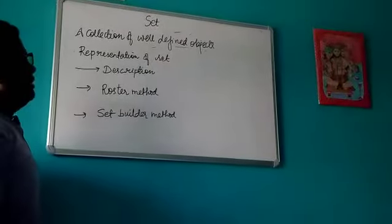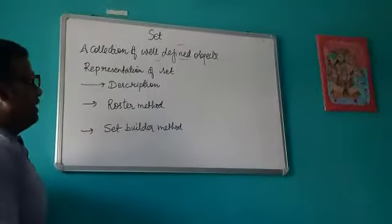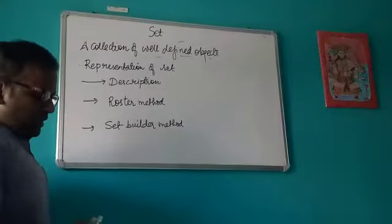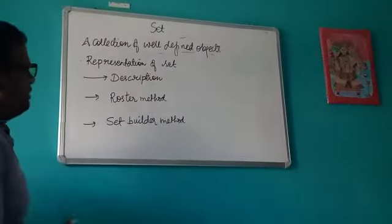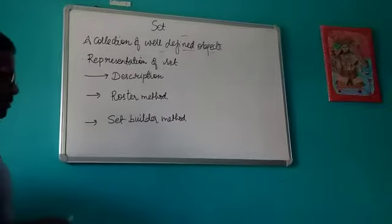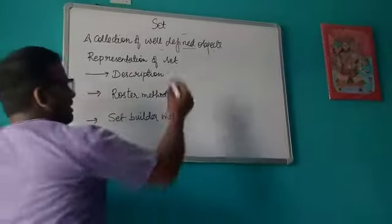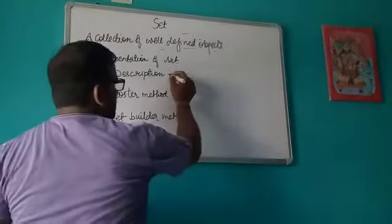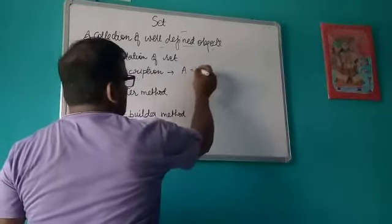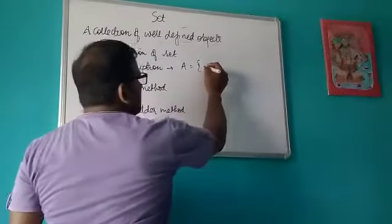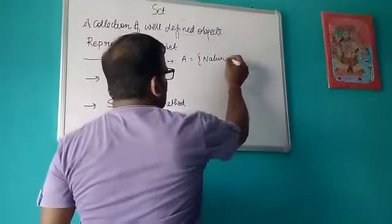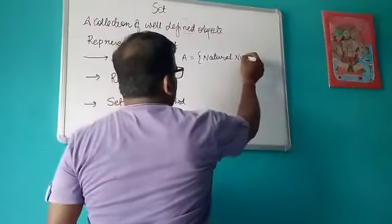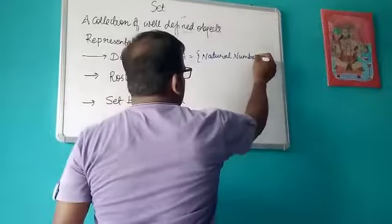The next topic is representation of sets. Whenever a set is given, there are three methods to represent it. The first method is the description method — for example, A is the set of only natural numbers. This is the set described by a statement.